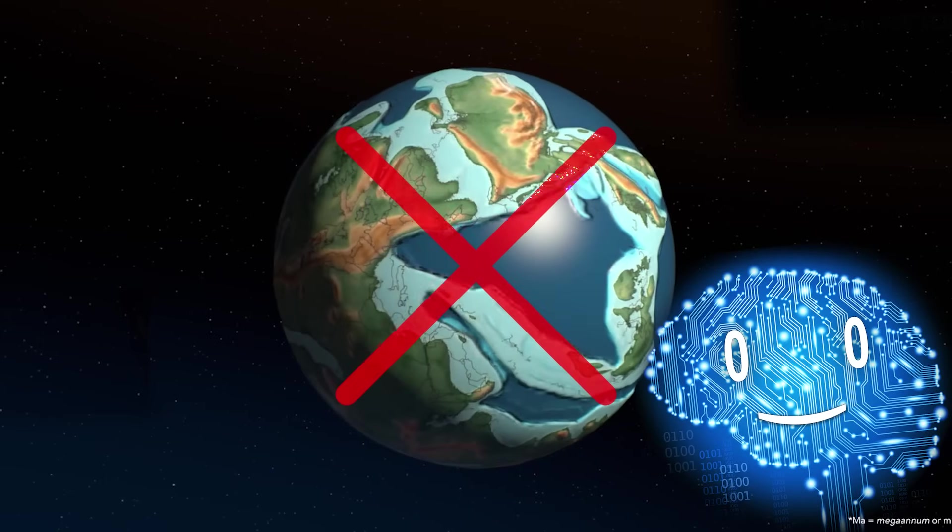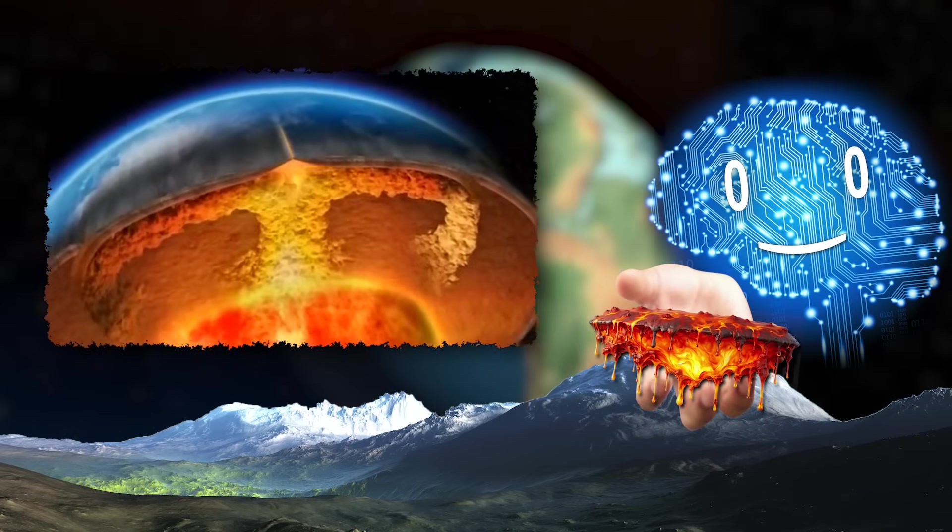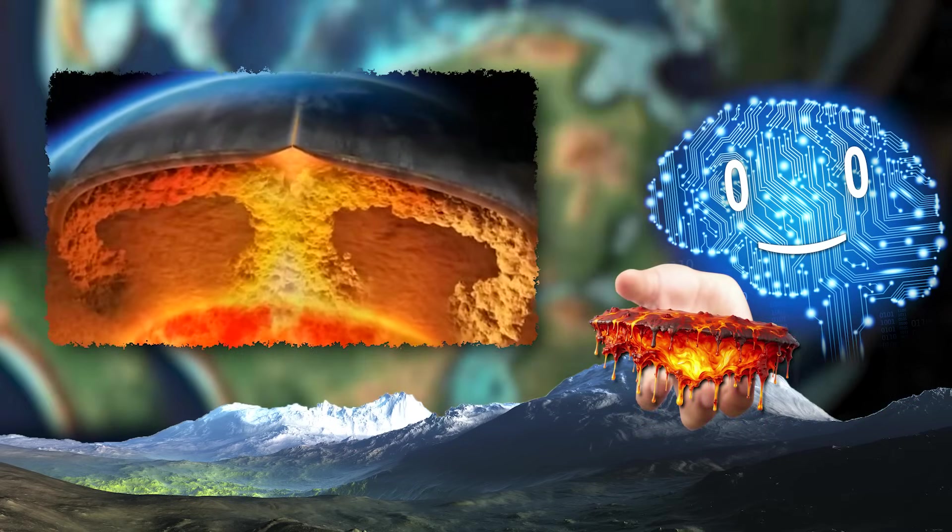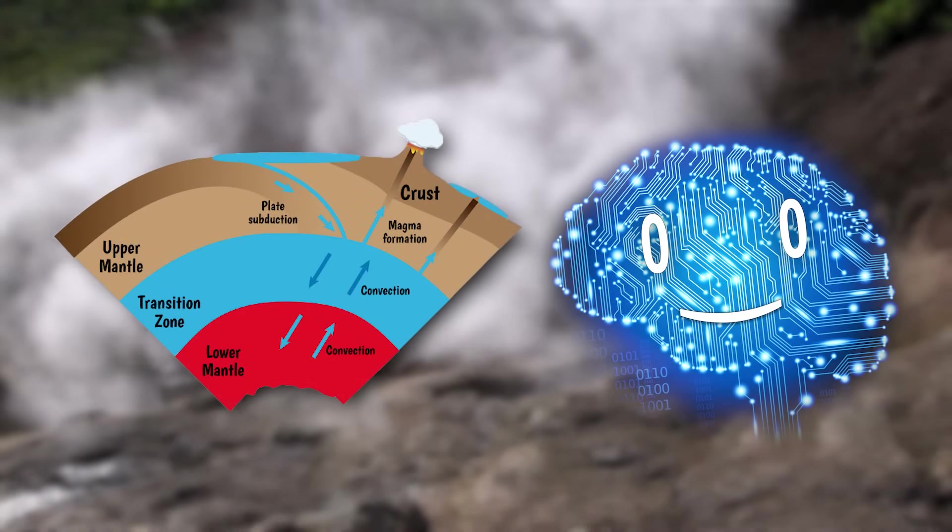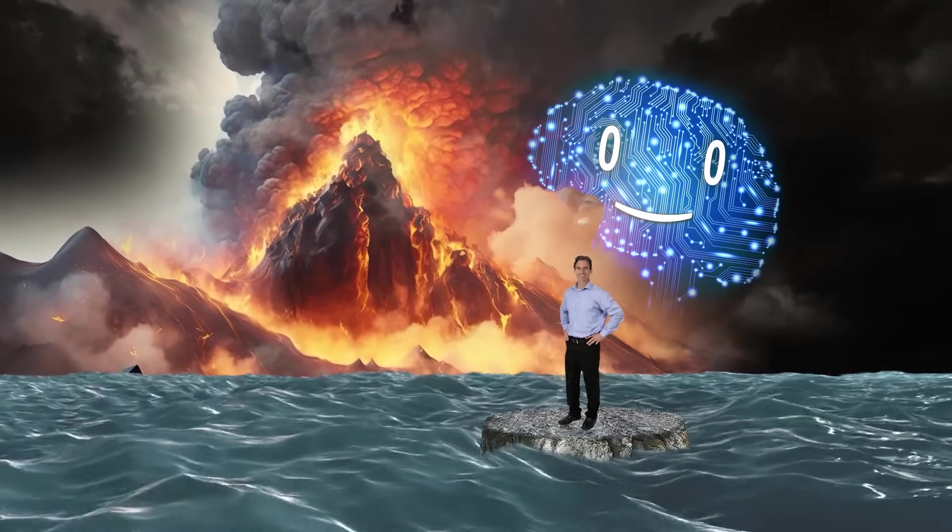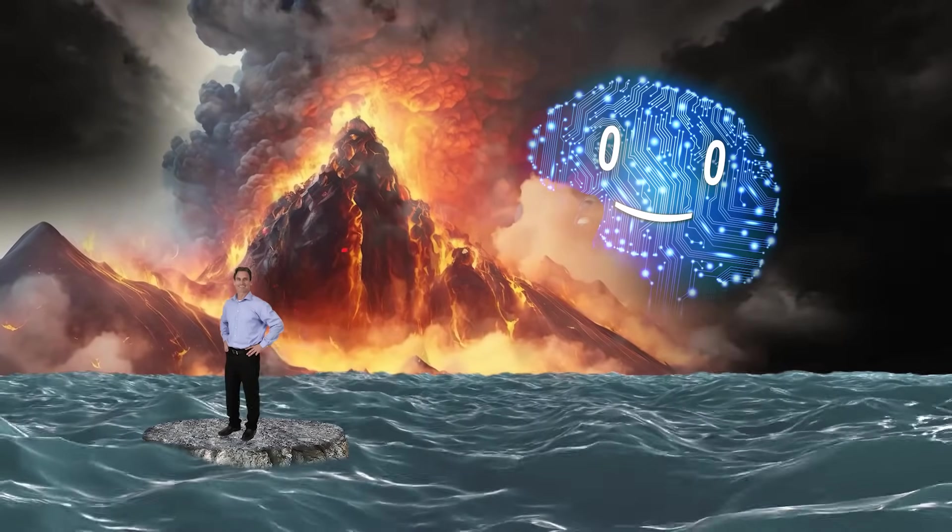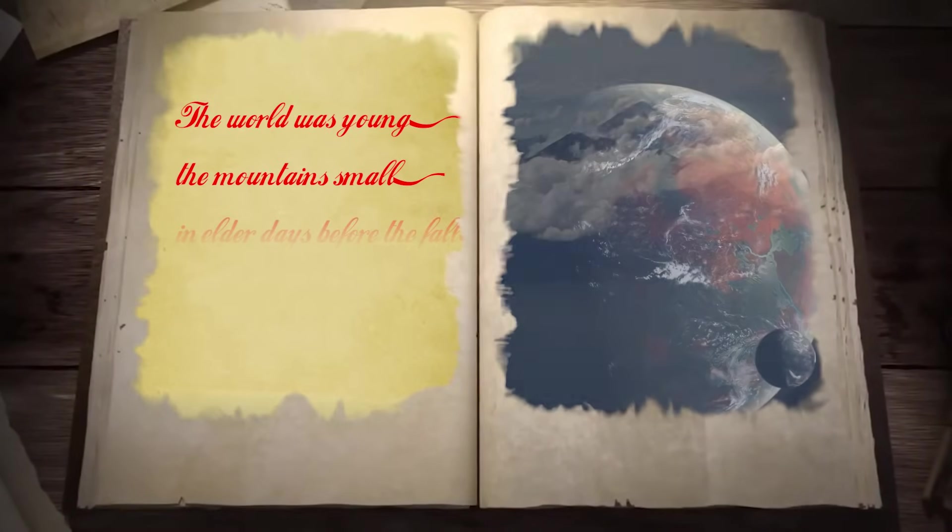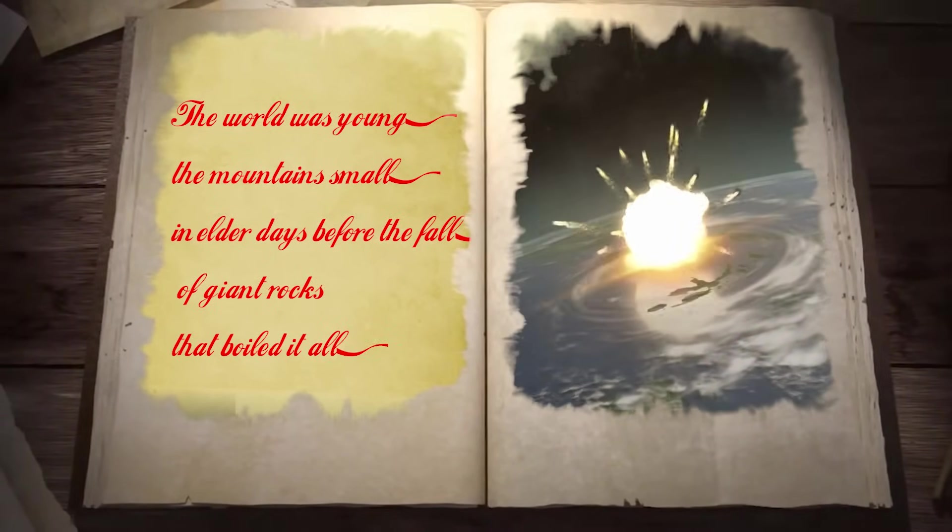There were no continents or significant elevations because the mantle had a lower viscosity due to the higher temperature kept up by radioactive decay and the fact that the water in the mantle had not yet fully outgassed. At most, you could enjoy the hellscape from some tiny volcanic islands made from angry black rocks. The world was young, the mountains small, in elder days before the fall of giant rocks that boiled it all.